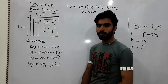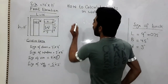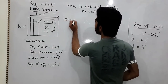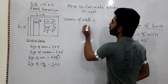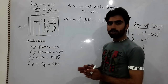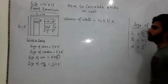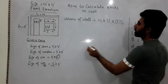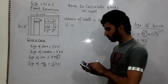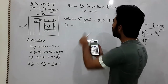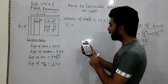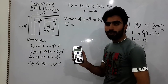9 inches is equal to 0.75 feet when you convert inches to feet. Now I want to calculate the volume for this section. Volume of wall is equal to 14 feet multiplied by 11 feet multiplied by the thickness of the wall, which is 0.75 feet. So 14 × 11 × 0.75 gives you 115.5 cubic feet.